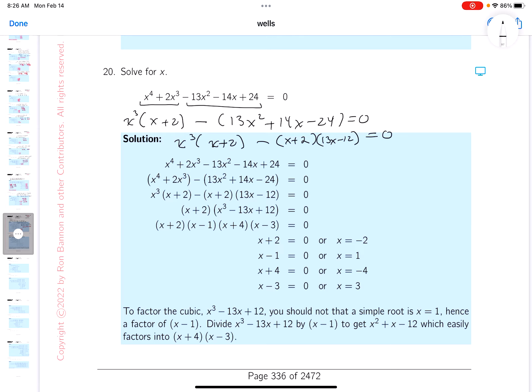So what I'm going to do now, I'm going to factor out the x plus 2. And then what are we left off with? x cubed, right? And now I've got to be careful here, because it's minus the quantity 13x minus 12. So it's going to be minus 13x plus 12 equals 0, right?